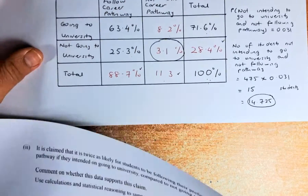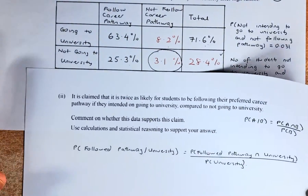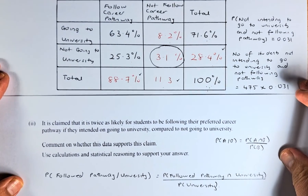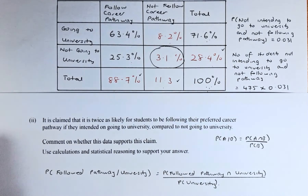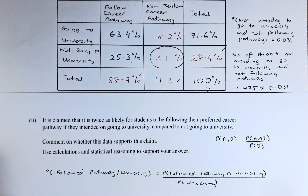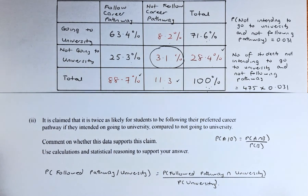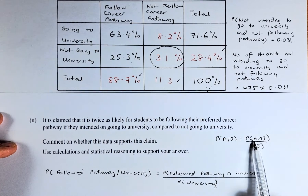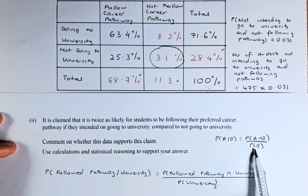Now we are going to use this table again to calculate the second part of the question. It is claimed that it is twice as likely for students to follow their preferred career path if they intended to go to university compared to not going to university. Comment on this data to support the claim. This involves conditional probability: the probability of A given B equals the probability of A and B divided by the probability of B.